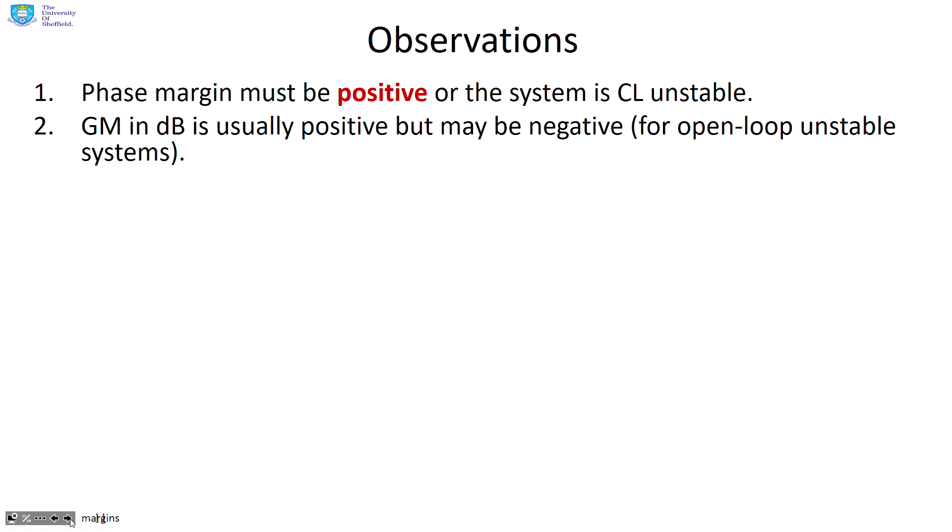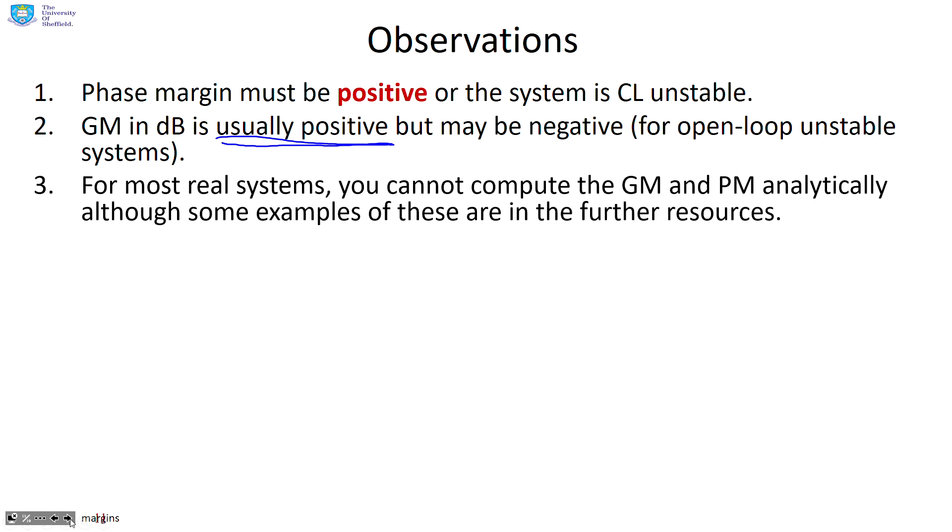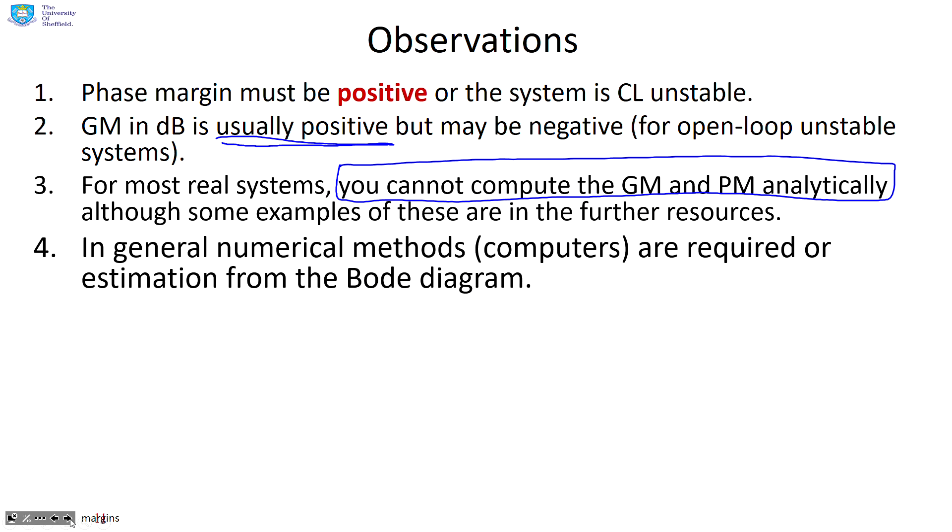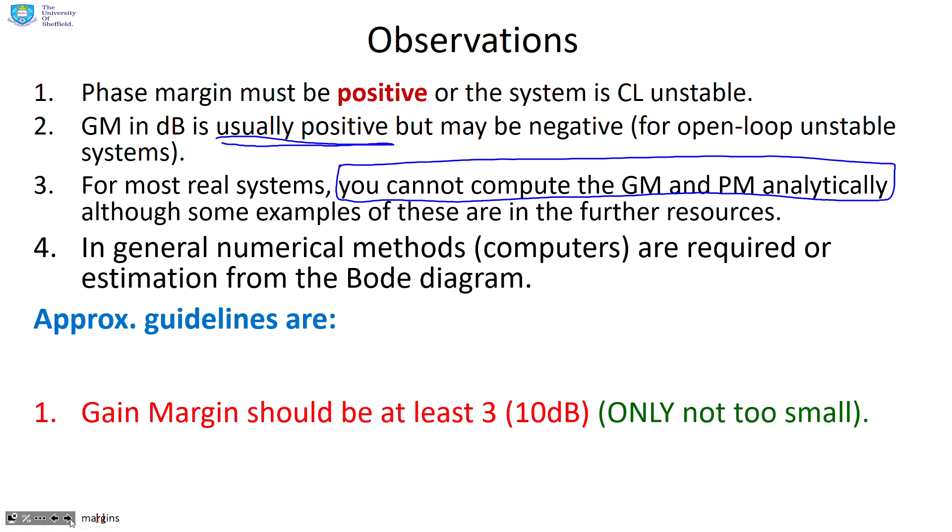Some observations. The phase margin must be positive, or the system is closed-loop unstable. I'm not going to prove that, but that's generally well recognized. However, what about the gain margin? The gain margin in decibels is usually positive, but not necessarily. There are cases where you may have a negative gain margin and still be closed-loop stable. So if you want to be closed-loop stable, the phase margin must be positive, the gain margin not necessarily so. For most real systems, you cannot compute the gain margin and the phase margin analytically on pen and paper. For the vast majority, it's just too difficult. In general, you need numerical methods or to estimate them from the Bode diagram.